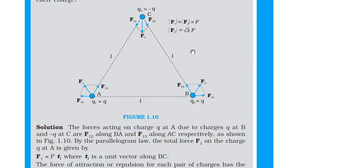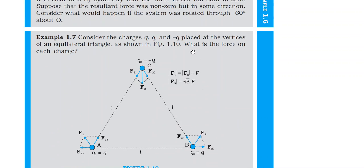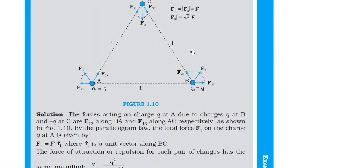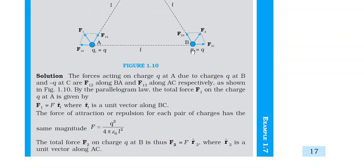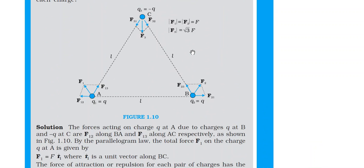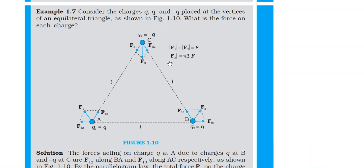We have discussed these two examples, 1.6 and 1.7. Example 1.7 is very simple. In this example, three charges are given and we need to find the net force. One charge is negative (minus q) and two charges are positive, and the magnitude of all three charges is the same — just the sign differs.